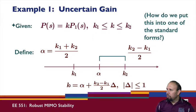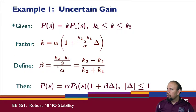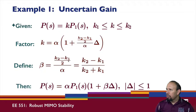We've rewritten k in terms of a nominal value alpha, a weighting, and the uncertainty delta. We can also factor out alpha. When we do that, we define beta as the normalized deviation, and we can show that P(s) can then be written as alpha times P1(s) times the quantity (1 + beta * delta).